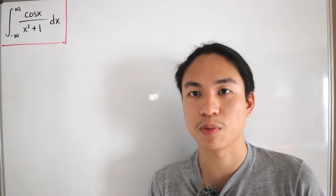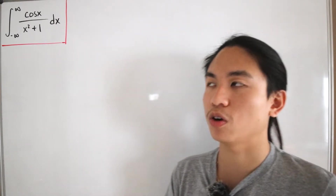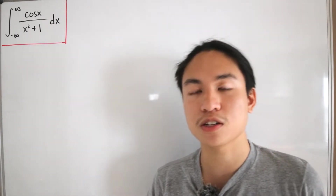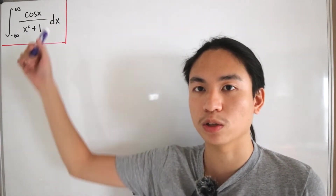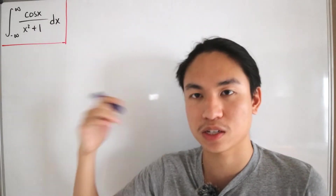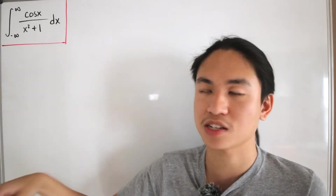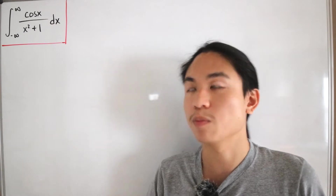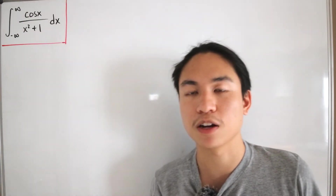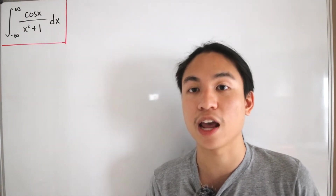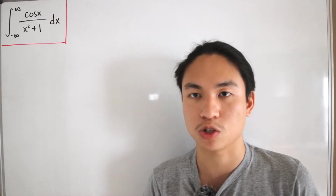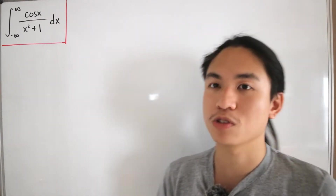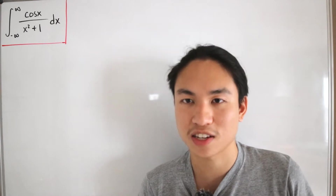Today's video is a twist — we are not going to be solving this integral using complex analysis. If you're wondering how that would work, you'd apply Euler's formula, replace cosine of x with e to the power i times x, take the real part, then apply contour integration and the residue theorem as you take the limit from negative infinity to infinity.